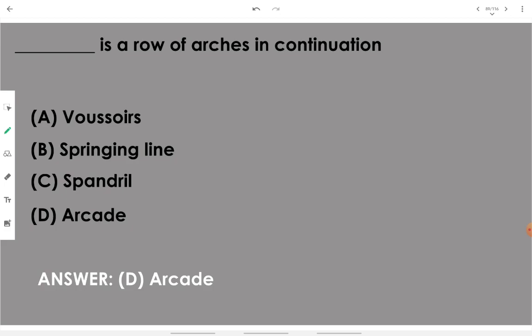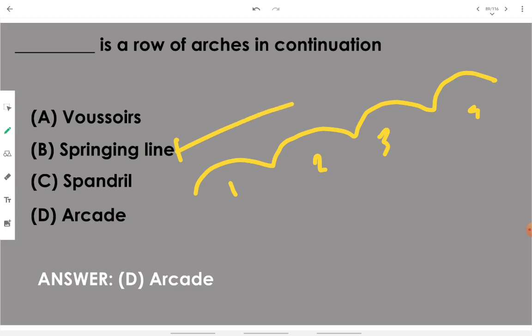An arcade is a row of arches in continuation. For example, a series of arches — arch number one, two, three, four in continuation — that specific range of arches is called an arcade.